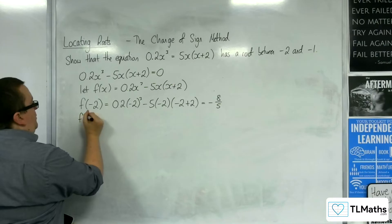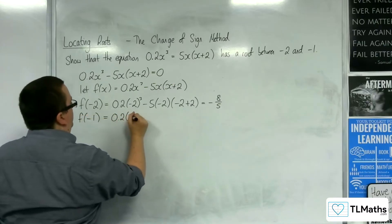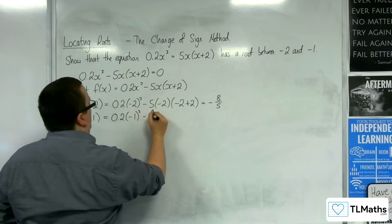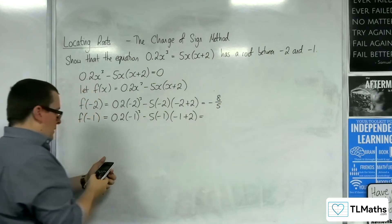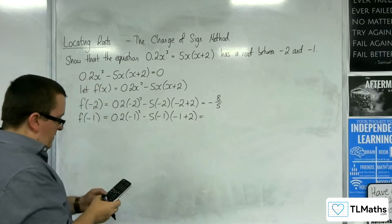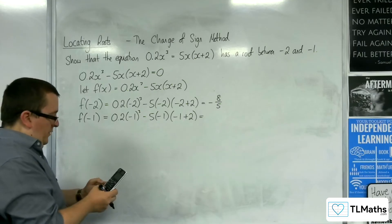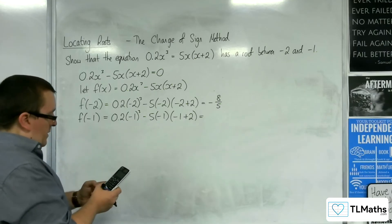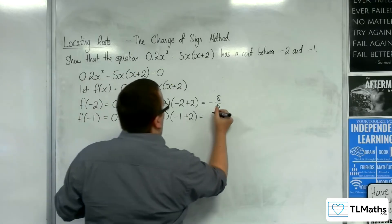Now I need to substitute in -1. So we get 0.2(-1)³ - 5(-1)(-1+2). So 0.2(-1)³ - 5(-1) times by -1+2, and we get 24/5.